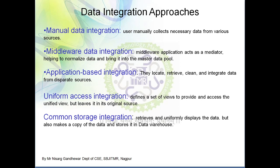The next approach is uniform access integration. The major feature to note is that it defines a set of views to provide a unified view of data. Importantly, in this case we leave the data in its original source — we are not making a copy of the data. A view is the highest level of abstraction, allowing you to virtually access a particular part of the data.